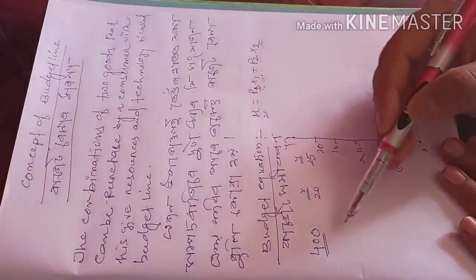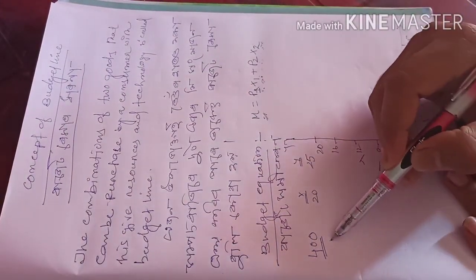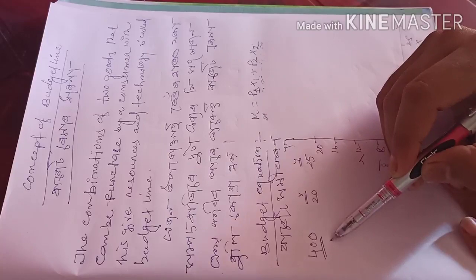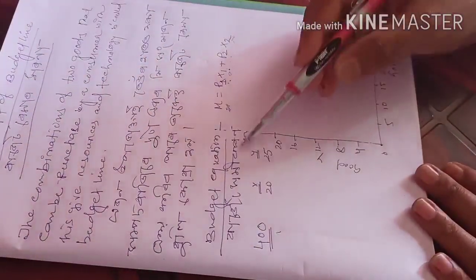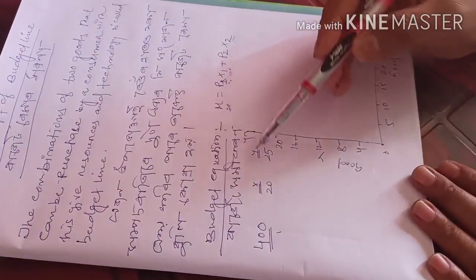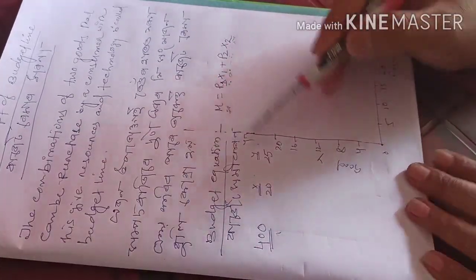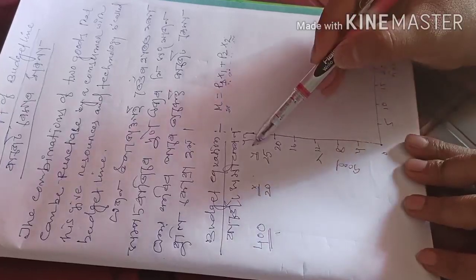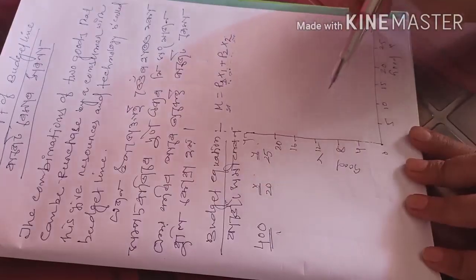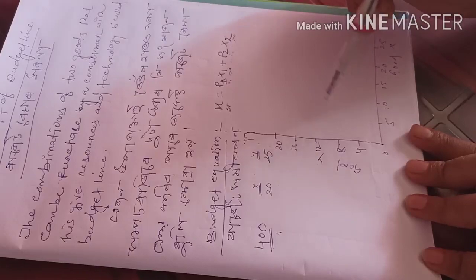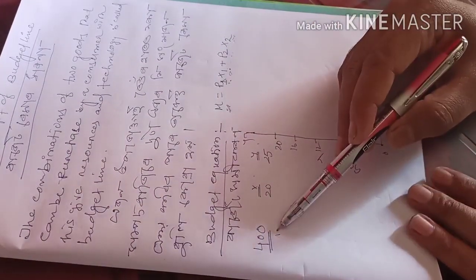For example, a consumer has an income of rupees 400. Suppose the budget of a consumer is 400 and he can purchase two commodities X and Y. The price of X is 20 and that of Y is 25. Now, we can draw the budget equation for this consumer with a budget of 400.